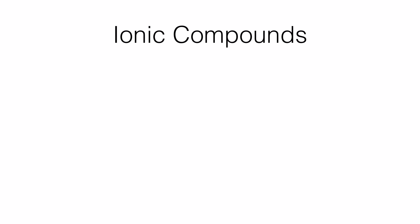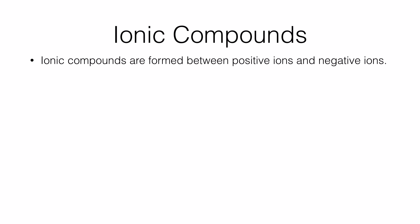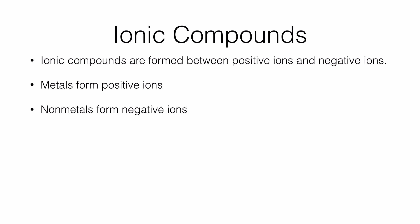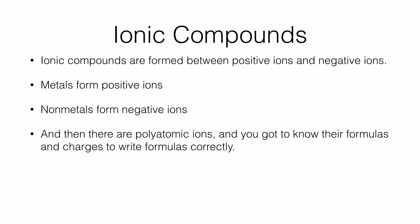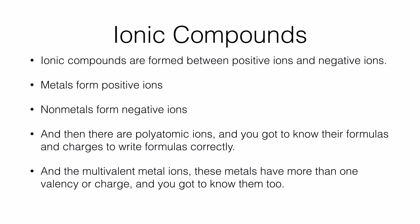First, we will take a look at ionic compounds and their properties. Generally speaking, ionic compounds are formed between positive ions and negative ions. Metals usually form positive ions and non-metals form negative ions. There are also polyatomic ions, which you should know the formulas and charges for, as well as multivalent ions or transition metals that usually show more than one valency or oxidation state.